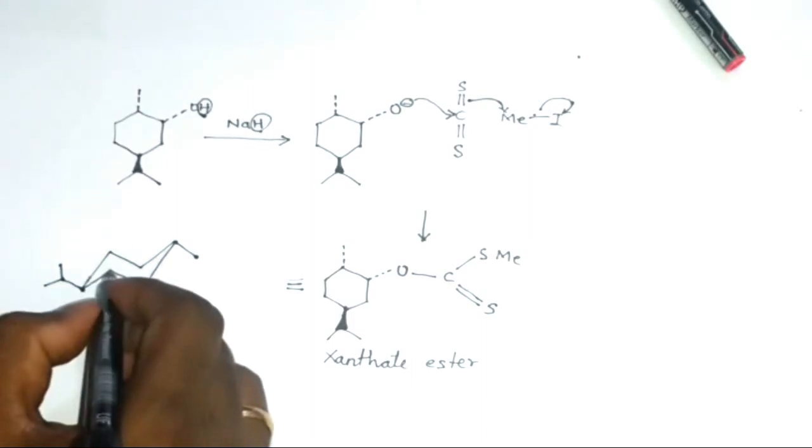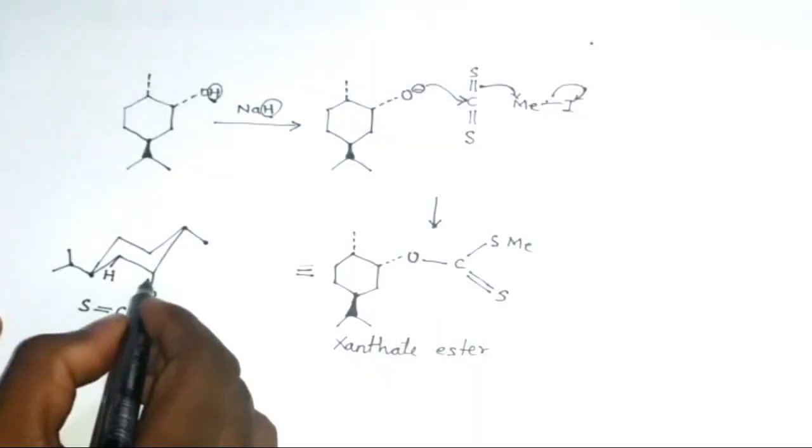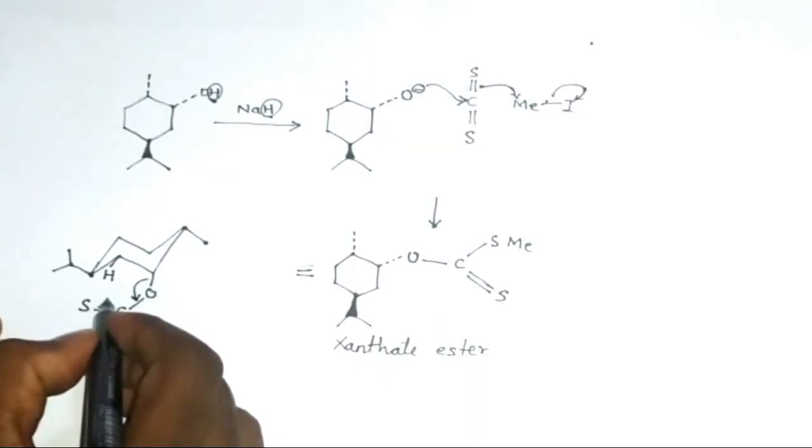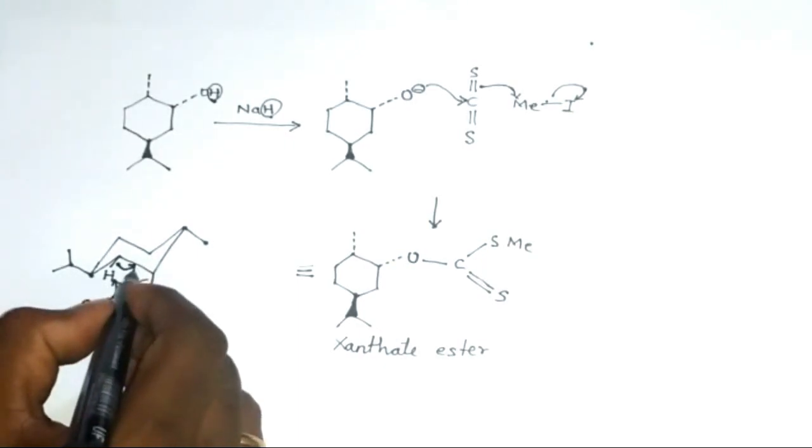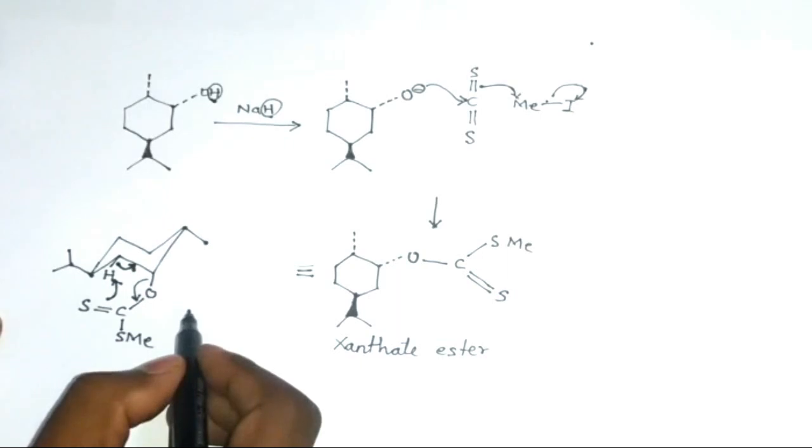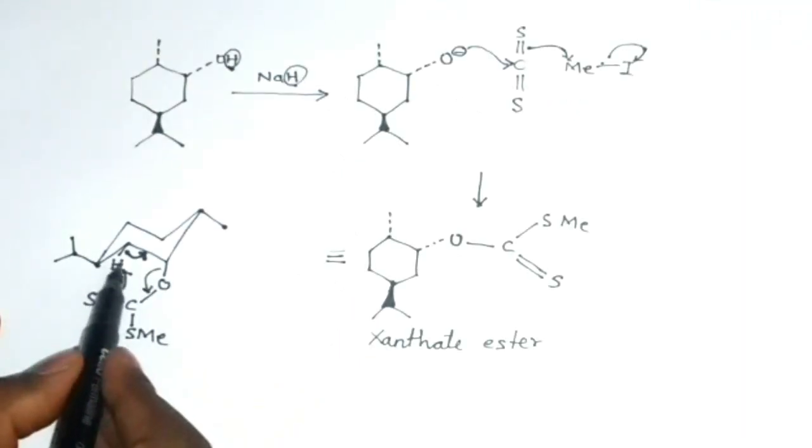And a hydrogen is here. This bond can come here, this bond will attack the hydrogen, and this bond will fall here. This is pyrolytic syn elimination, known as Chugaev reaction. This particular group reacts with hydrogen which is adjacent to it.